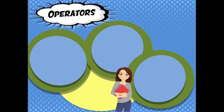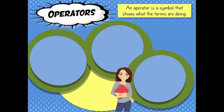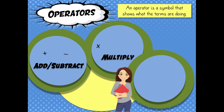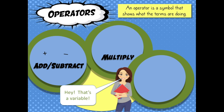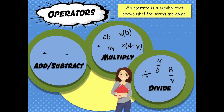Just one more definition: operators. Operators are doctors who perform surgeries — just kidding. In math, an operator is a symbol that shows what the terms are doing. You know these: addition and subtraction. And you've probably seen this one — it's multiplication. But in algebra, that x can easily get confused with the variable x, so we don't use that to show multiplication anymore. Now we use a few other things, like just a dot, or we shove things close together, like ab or 4y. Or if something is close to a parenthesis, then it's multiplied — like a(b) or x(4 + y). Division is less complicated: it's the good old division sign and the fraction, like a ÷ b or 8/y. So that's it — those are the operators.